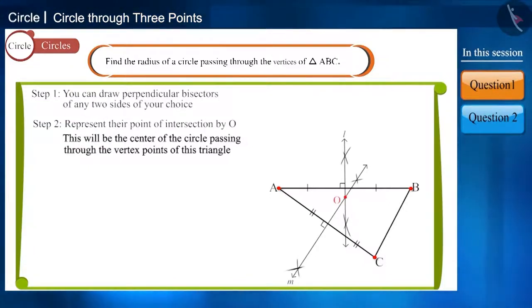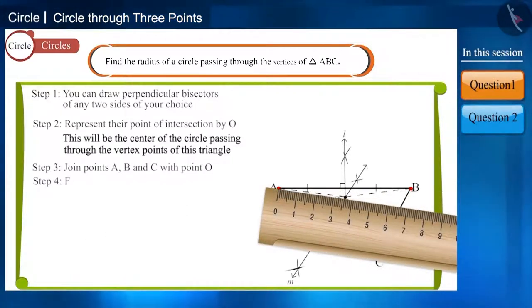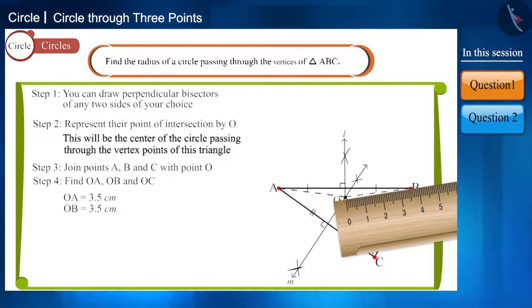Now, let's consider this intersection point as O and join OA, OB and OC in this manner. With the help of a scale, you can now find the length of all three OA, OB and OC.